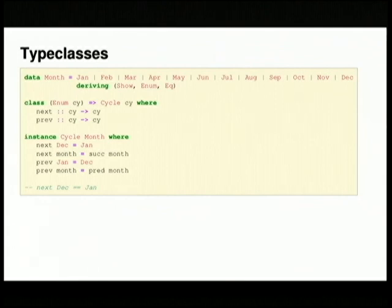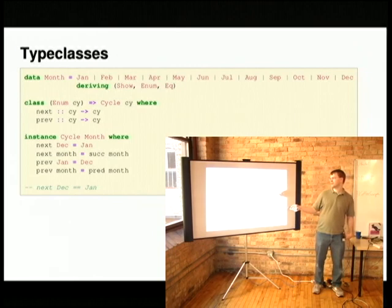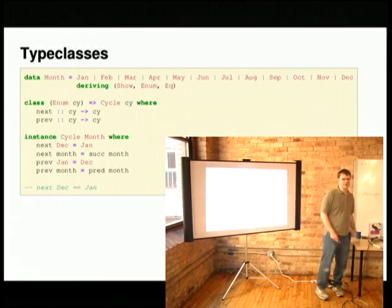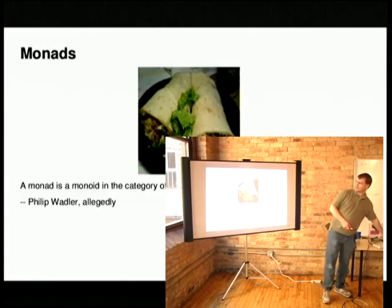This is also an example of the pattern matching that Haskell people like to use for their function definitions, where you just say, this is the function name, this is a very specific argument, same function name, more general argument. As long as you have something general enough to capture everything, your compiler is happy.